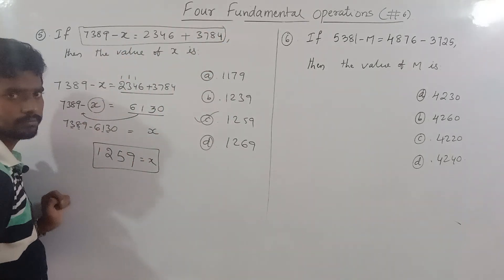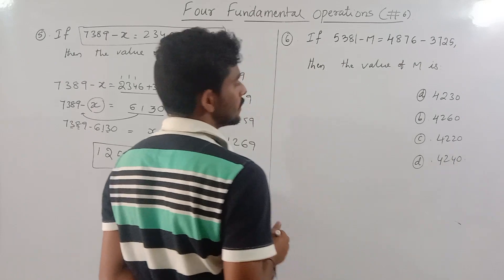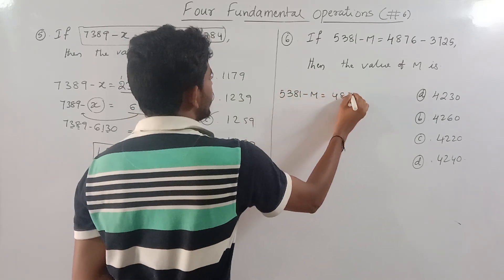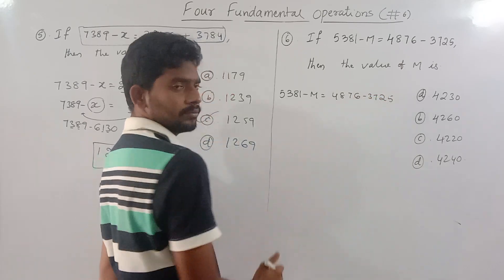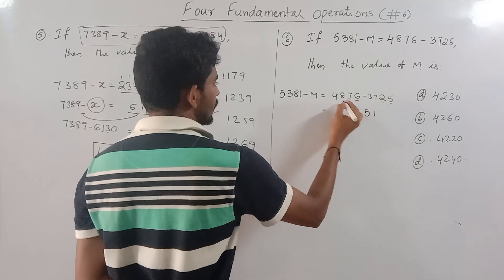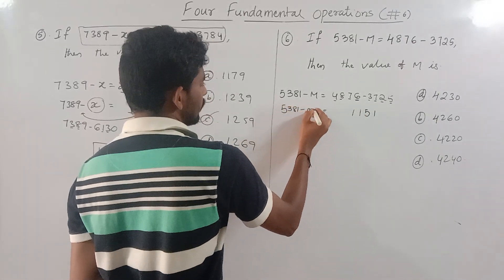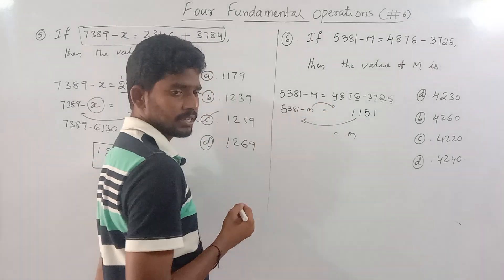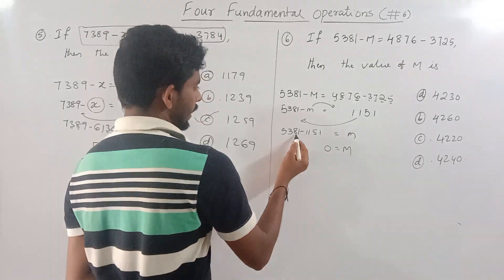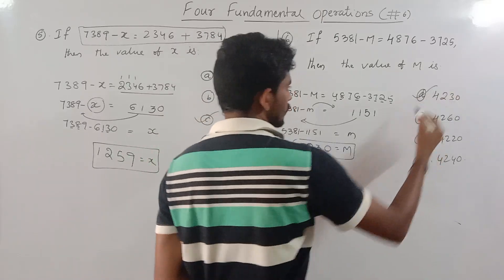Next one: 5381 minus M equals 4876 minus 3725. So subtract 4876 minus 3725 first, then solve for M. Working through the subtraction steps, M equals 4230. So 4230 is the correct answer.